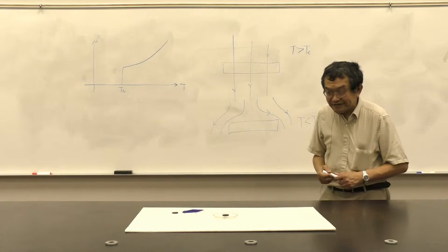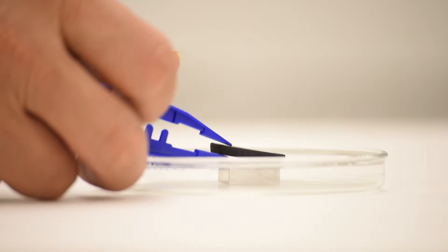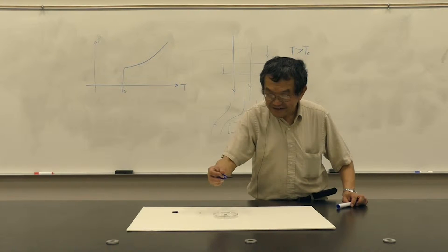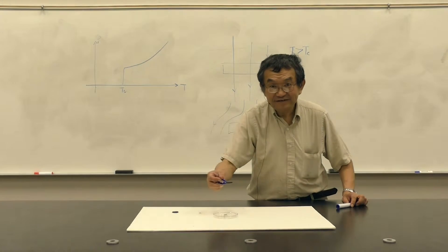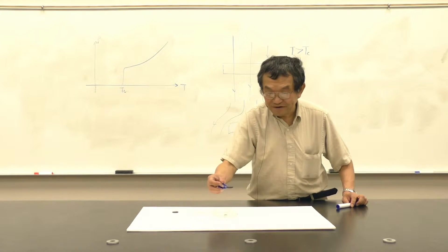In the demonstration today, I am showing this phenomenon with a magnet and a superconductor. This superconductor is called a high Tc superconductor, made of bismuth, sodium, calcium, copper, and oxide.